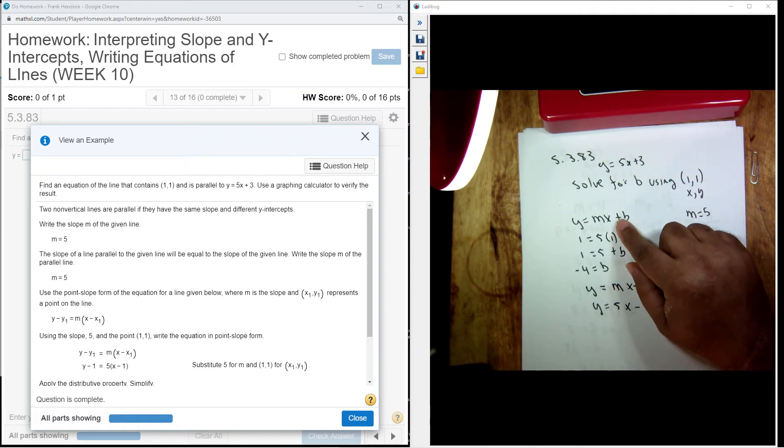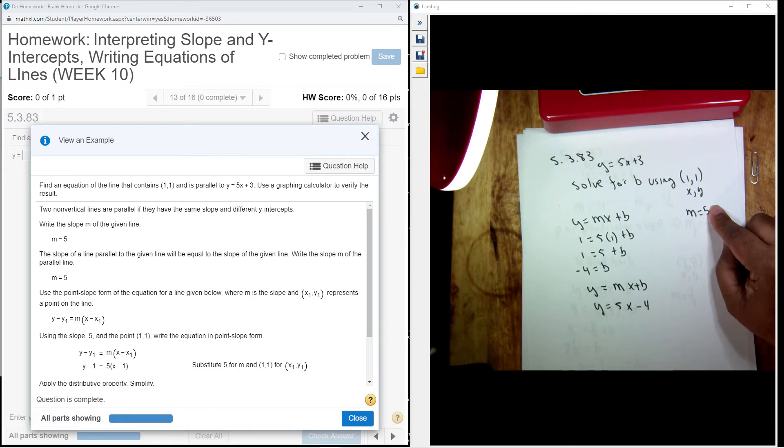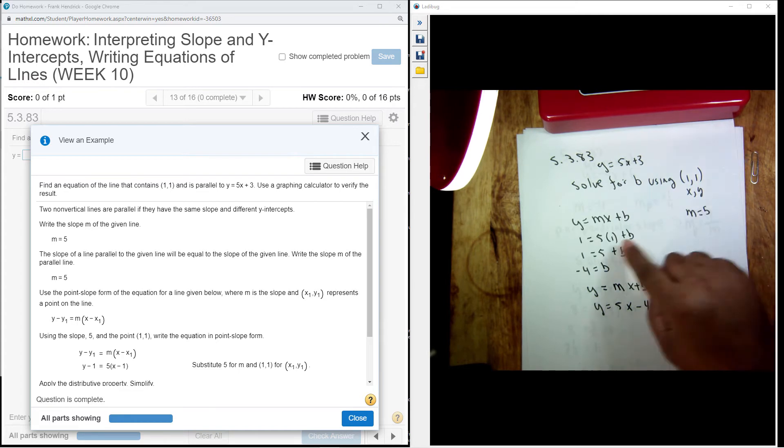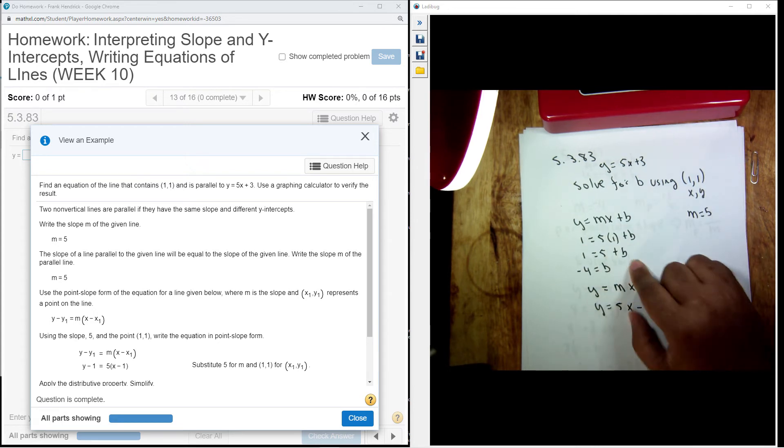Okay, and since it's parallel, it's going to have the same slope. So, I can plug in for my slope here, and use the point 1, 1 from x and y, and I can solve for b.